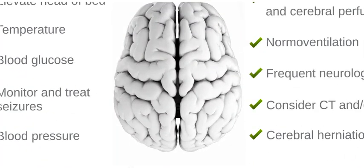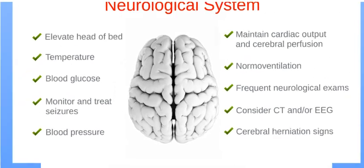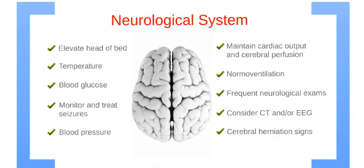Next, let's review post-resuscitation care for the neurological system. When monitoring temperature, avoid hypothermia and treat an elevated temperature. For cardiac arrest, consider hypothermia protocol. If hypothermia protocol is initiated, avoid rewarming unless hypothermia is causing complications. Monitor routine labs, including blood glucose, and treat abnormalities.